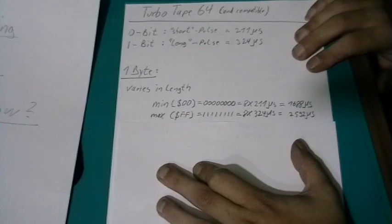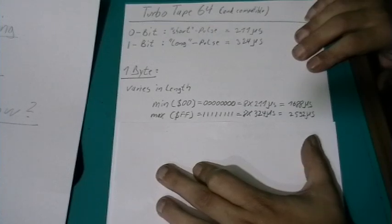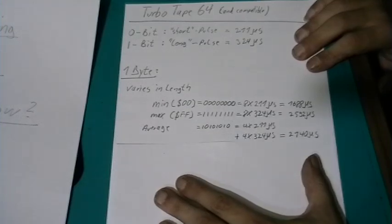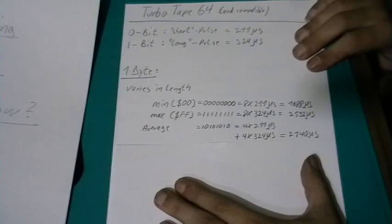A byte consisting of only ones, a hexadecimal 0080 will be represented by 8 long pulses of 324 microseconds totaling in about 2.6 milliseconds. An average byte with equal amount of 1s and 0s will be about 2.1 milliseconds. And that's all.